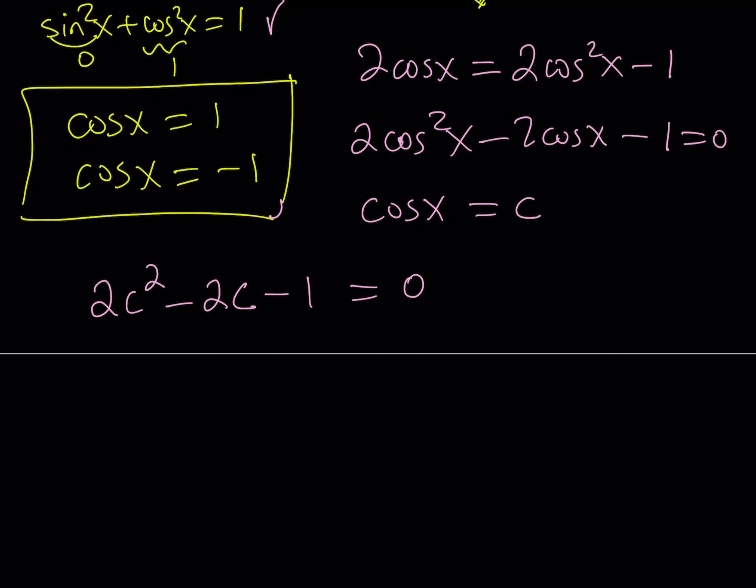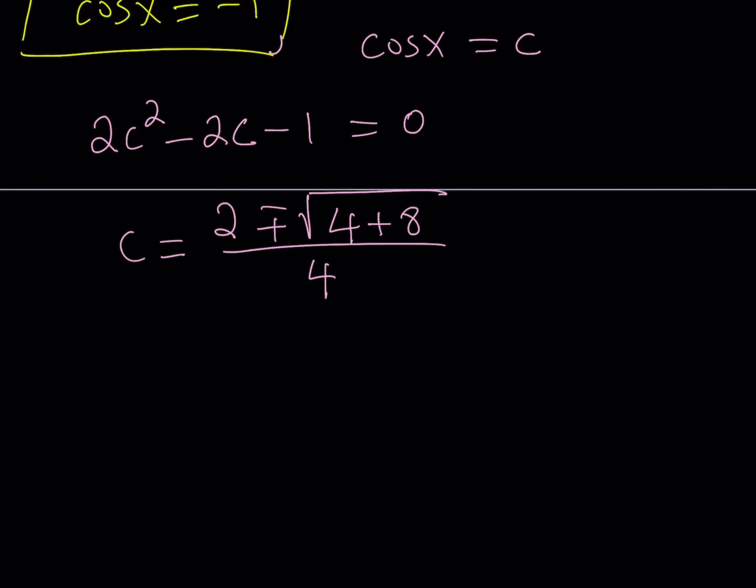And if you solve this using the quadratic formula, you should be getting two solutions. Negative b plus minus the square root of b squared, which is 4, minus 4 times 2 times negative 1. That should give us a positive term. 4 times 2 is equal to 8. Great. So from here, we should be getting divided by 2a, which is 4. So these are the cosine x values, but let's go ahead and simplify this.